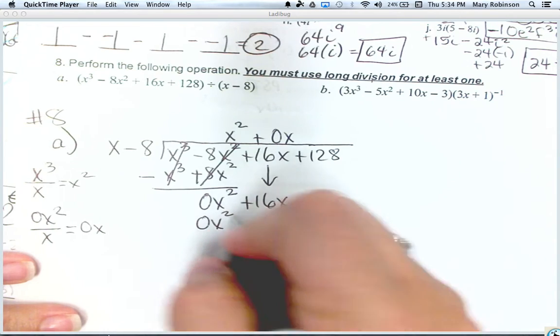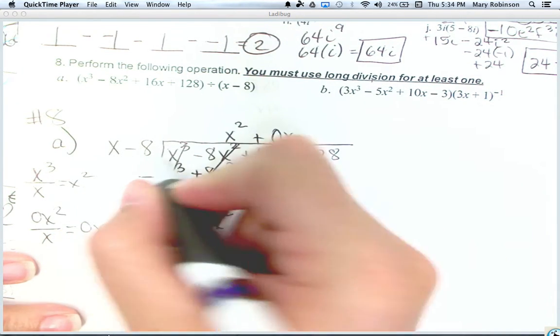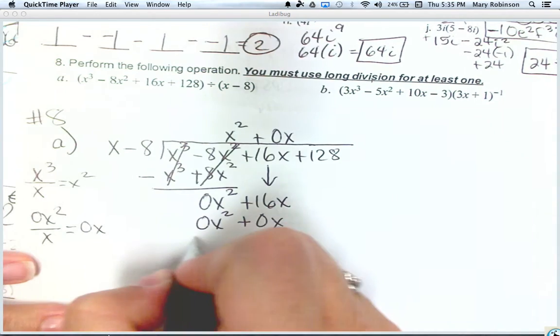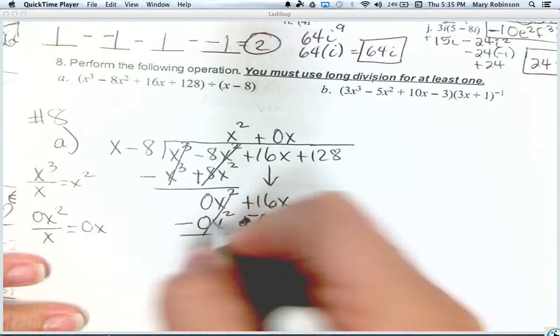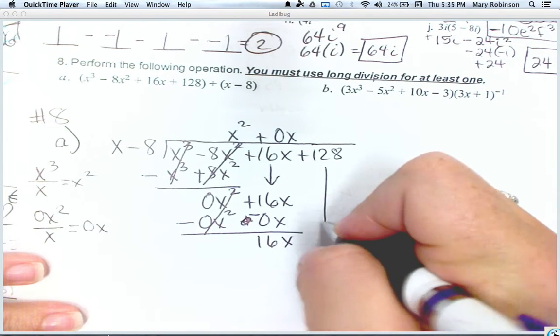Distribute 0x squared plus 0x because 0 times negative 8 is 0x. Draw your line. Switch your signs. It might seem weird, but just keep going. So bring down your 128.